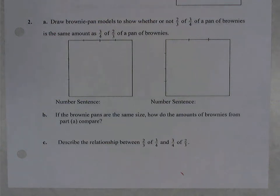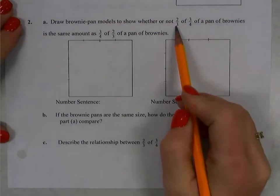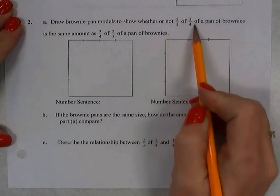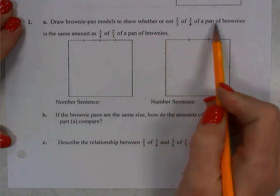The brownie pan problem. Today we look at finding a part of a part. So in this case, two-thirds of three-fourths of a pan of brownies.